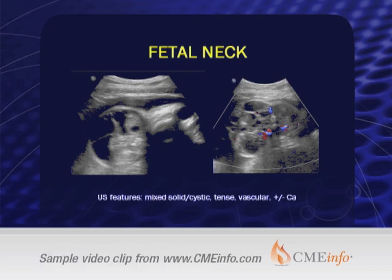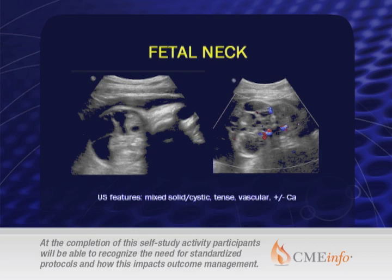On ultrasound for a germ cell tumor, what are we interested in? If you see some calcifications, that's very helpful. Most of these are teratomas — when you slice them pathologically they may have other little bits of germ cell tumor in them, but they're primarily teratomas. And they're almost always mixed cystic and solid, though that feature may not help us because there's significant overlap with vascular malformations too.